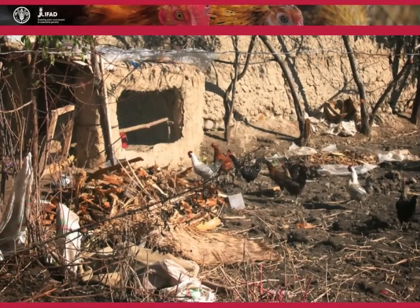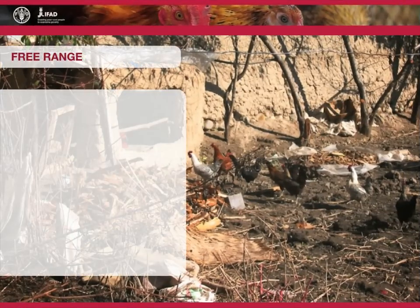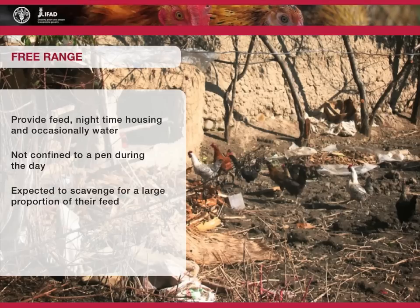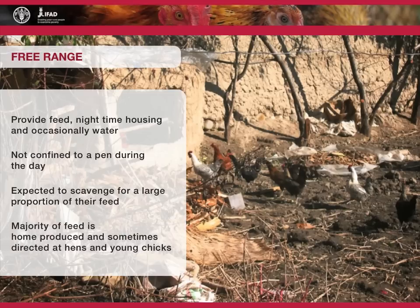In free-range poultry production systems, people provide feed, nighttime housing, and occasionally water for the birds. However, the poultry are not confined to a pen during the day and are expected to scavenge for a large proportion of their feed. A majority of the supplementary feed used is home-produced, and in some cases feeding is directed at hens with a brood of young chicks.